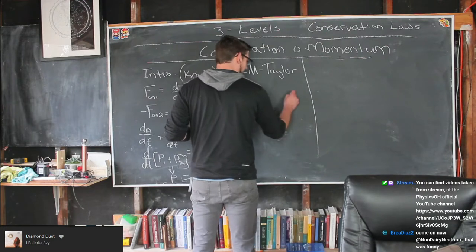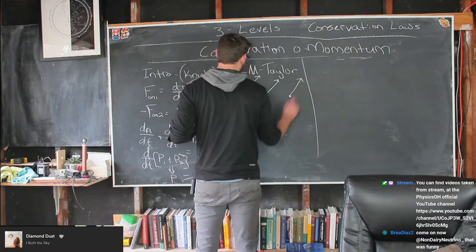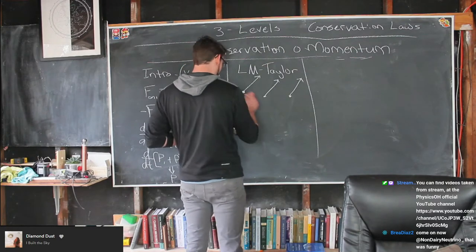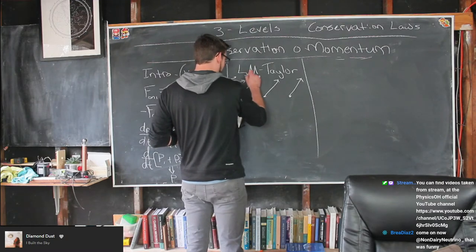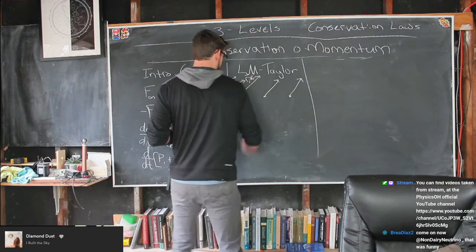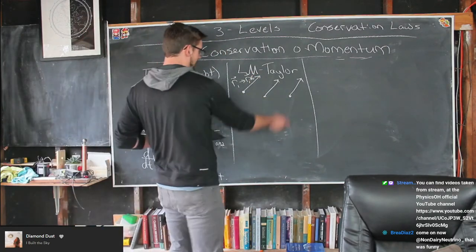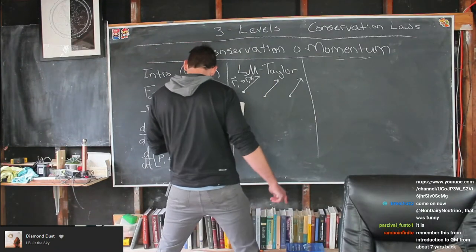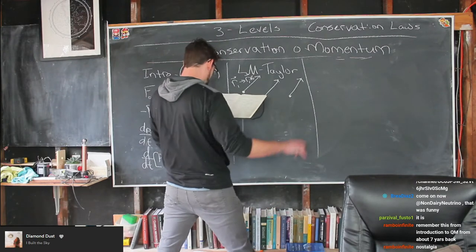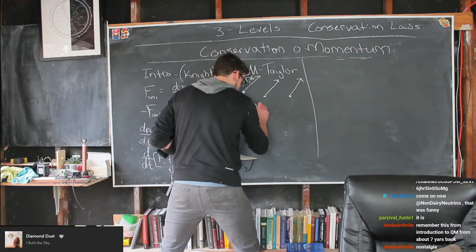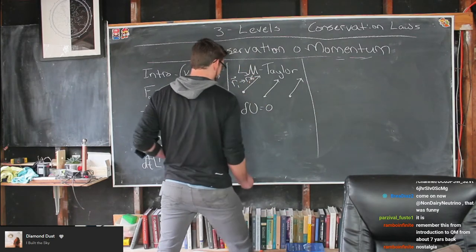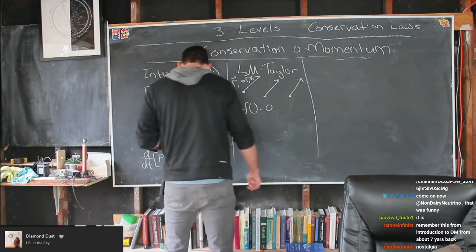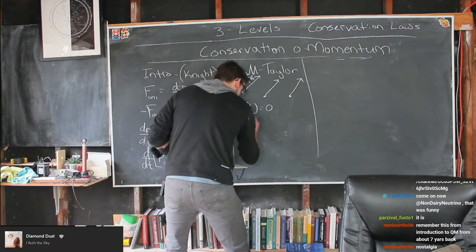In Lagrangian mechanics, suppose we have a bunch of particles and we translate them through space. Particle at r1 goes to r1 plus some small epsilon displacement; r2, r3 all get varied by that same small epsilon. The goal is that the potential energy should be unaffected — the variation of the potential energy should equal zero. This is translational symmetry: moving the system through space shouldn't change the potential in a closed system.